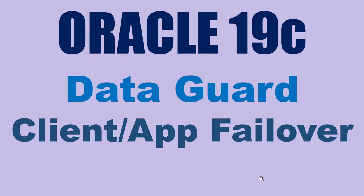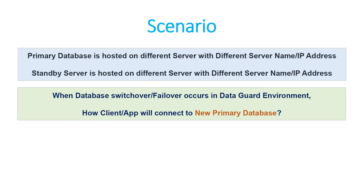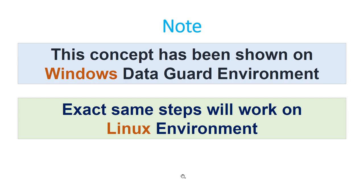In this tutorial I'll talk about how to set up client or application level failover in a Data Guard environment. The scenario is: the primary database is hosted on a different server with a different server name and IP address, and the standby server is also hosted on a different server with a different server name and IP address. When a Data Guard switchover or failover occurs, how will the client or application connect to the new primary database? This concept is demonstrated on a Windows Data Guard environment, but the exact same steps will work on Linux as well.